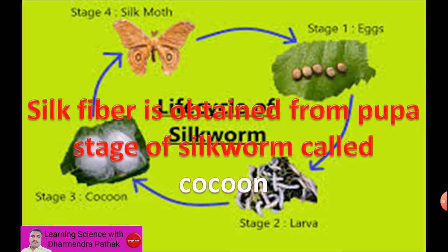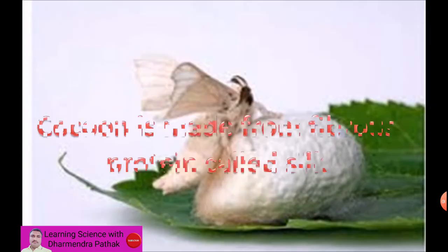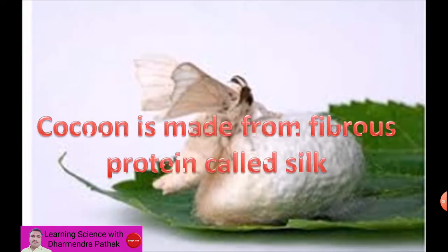Silk fiber is obtained from the pupa stage of the silkworm, called the cocoon. The cocoon is made from a fibrous protein called silk.